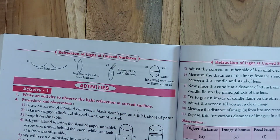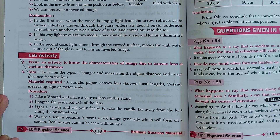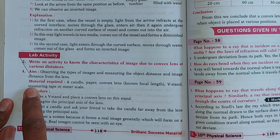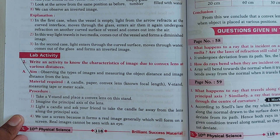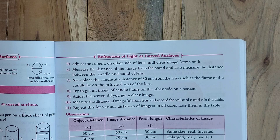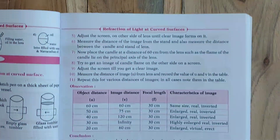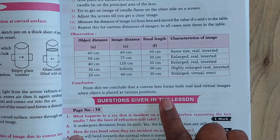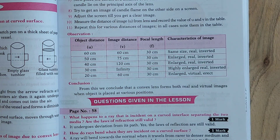Now let's move to Lab Activity. The lab activity continues into the next page. You can see the materials required, followed by the procedure — there are a total of 11 points. Four points are on this page, and more continue on the next page. After the procedure, we have the observation section. The lab activity ends up to here.